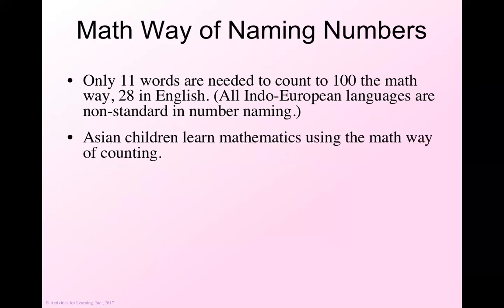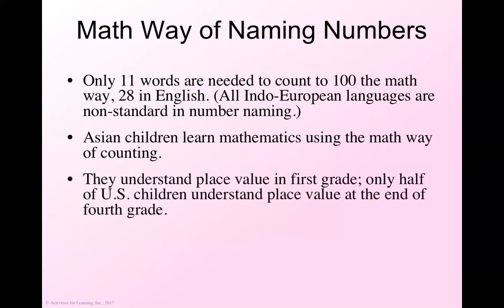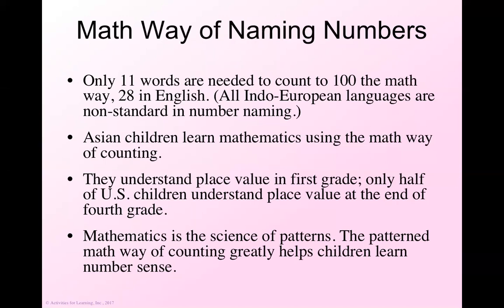There's only 11 words needed to count with the math way of counting. But with English language, we actually need 28 different words. When we don't use the math way of counting, it's almost like we've combined an English lesson and a math lesson together, which can be very confusing for some kids instead of just taking it one step at a time. Asian children, because of their language, learn mathematics using the math way of counting and understand place value in first grade. Studies show that only half of U.S. children understand place value at the end of fourth grade, which causes a ton of problems with arithmetic.